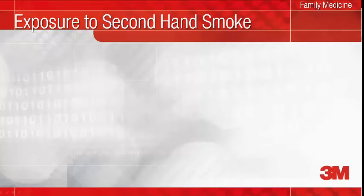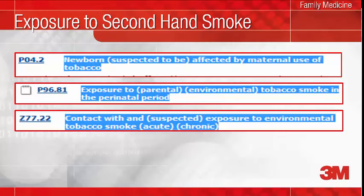What's new is that ICD-10 provides codes to indicate exposure to secondhand smoke in utero, during the perinatal period, and after the perinatal period. The ICD-10 classification system requires that codes for these exposures be reported with all respiratory diagnoses as well as with some conditions of the ears, nose, and throat — for example, otitis media.